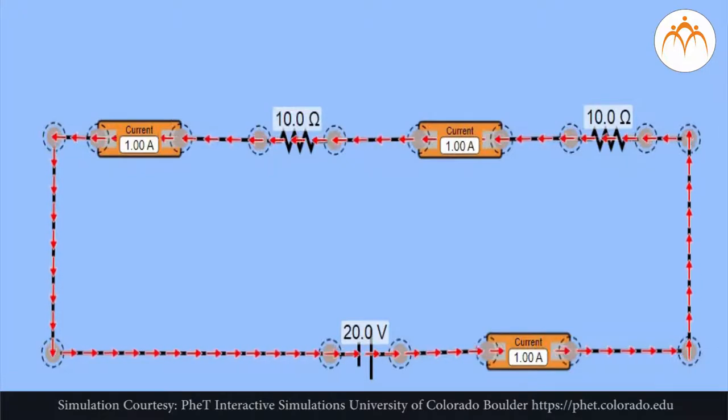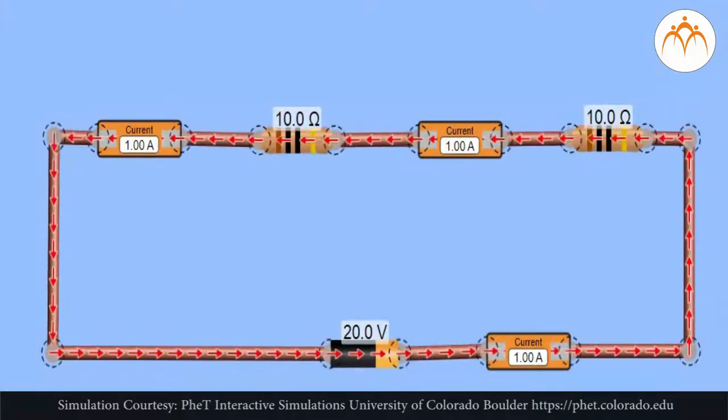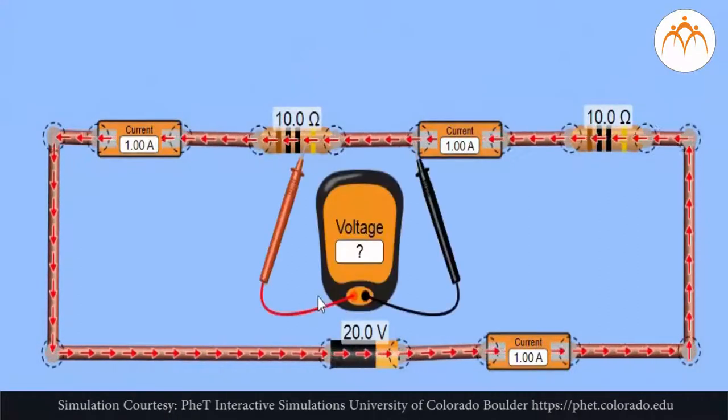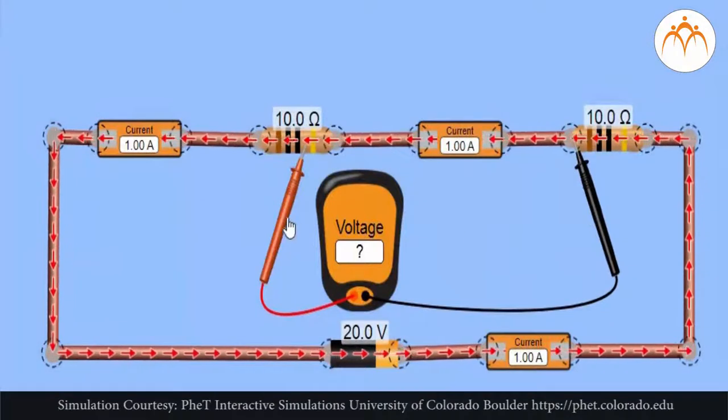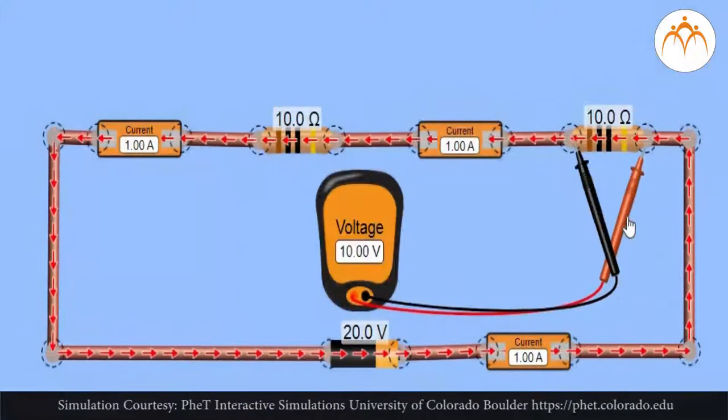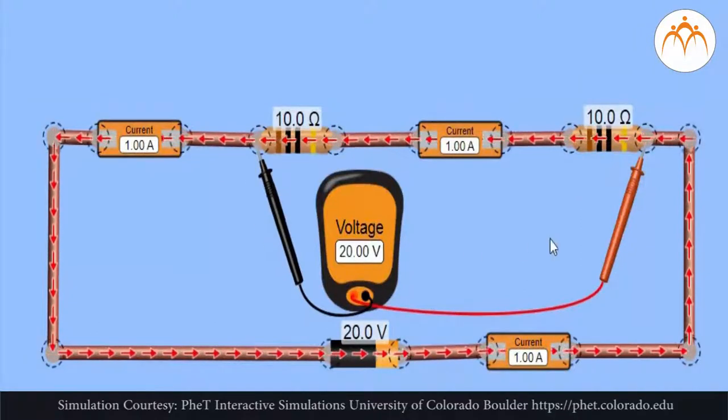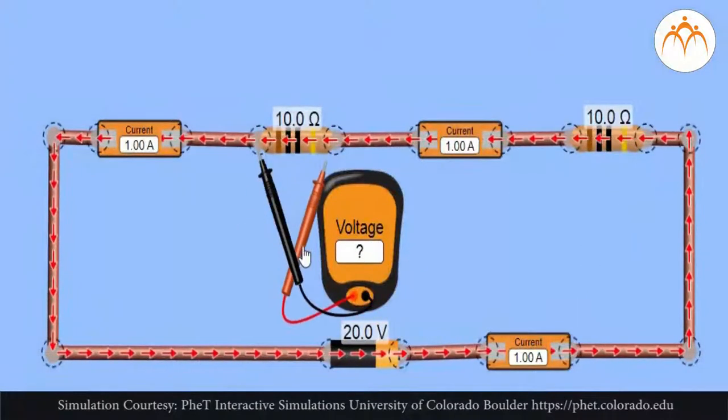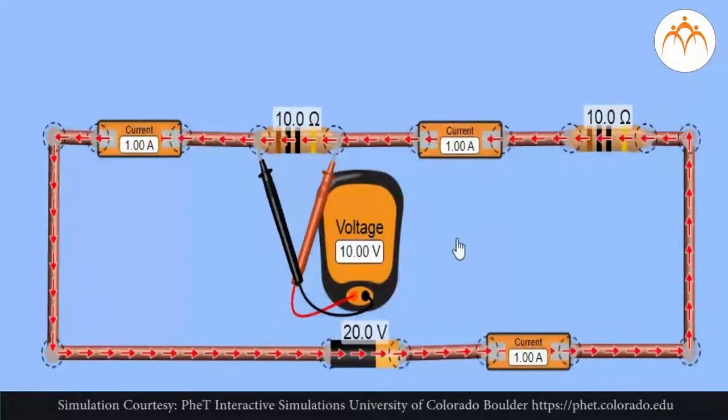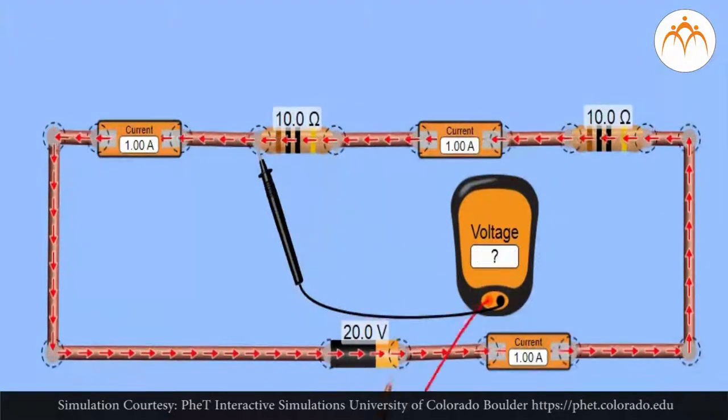As charges move through the external circuit, they encounter a loss of 20 volts of electric potential. This loss in electric potential is referred to as a voltage drop. It occurs as the electrical energy of the charge is transformed to other forms of energy: thermal, light, mechanical, etc., within the resistors or loads.